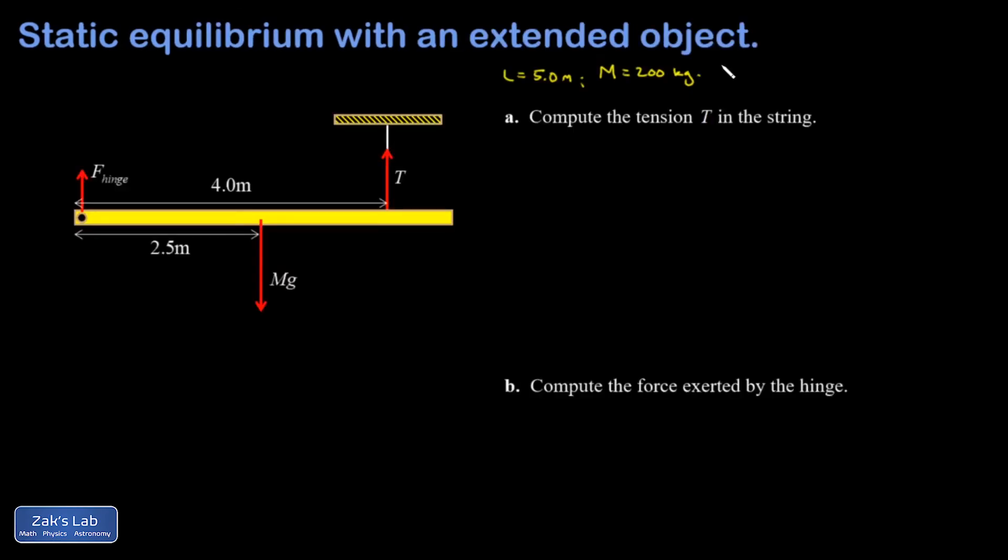In this second example, I have a rod with a length of five meters and a mass of 200 kilograms, and it's being held up against gravity by a combination of a hinge at one end and a string at the other end.